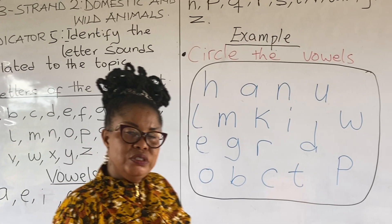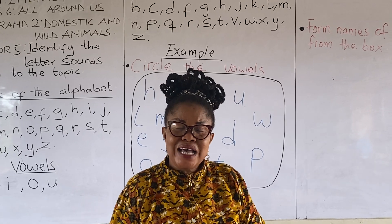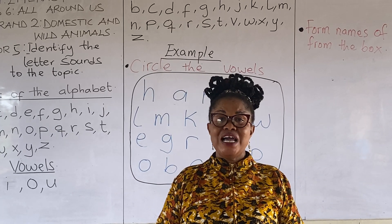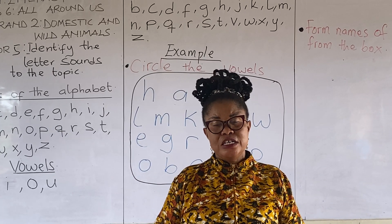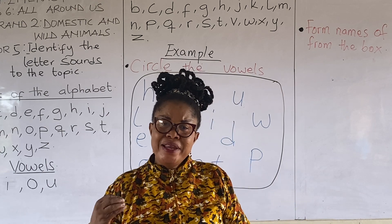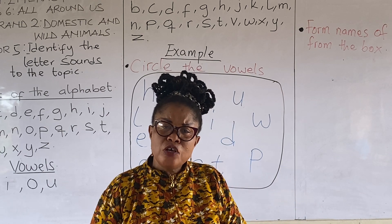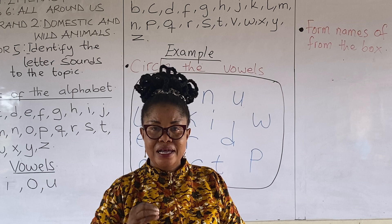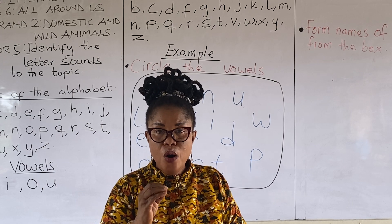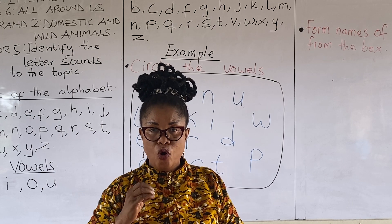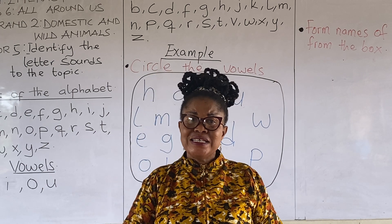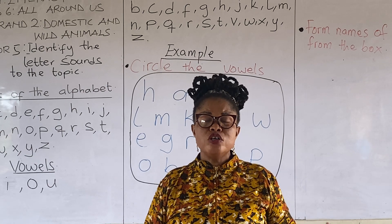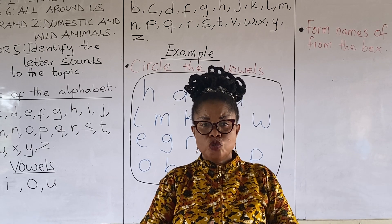Good. Words are formed by putting letters of the alphabet together. But within the letters of the alphabet, we have vowels and consonants. And before words are formed, we put vowels and consonants together.